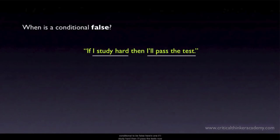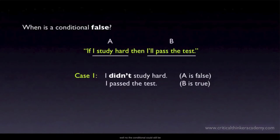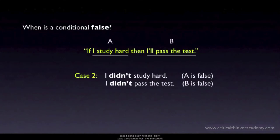The easiest way to understand the truth table is to think about when we would judge a conditional to be false. Here's one: if I study hard, then I'll pass the test. Let's say I didn't study hard but still passed — here the antecedent is false but the consequent is true. Would the conditional be false? No. The conditional could still be true; it doesn't say that the only way I'll pass is if I study hard. Now what about: I didn't study hard and I didn't pass the test — both antecedent and consequent are false. This clearly doesn't falsify the conditional; if anything, this is what you'd expect if the conditional was true and the test was hard.